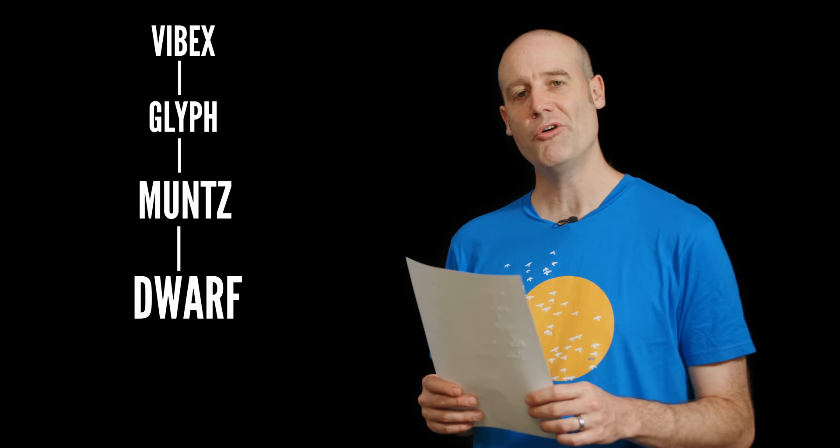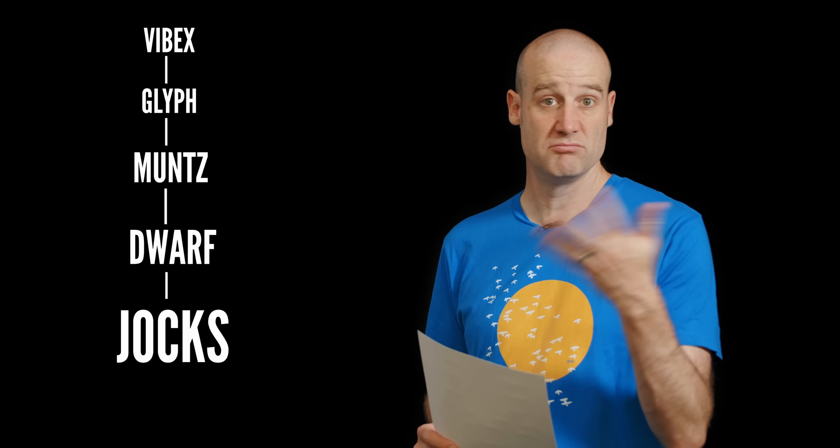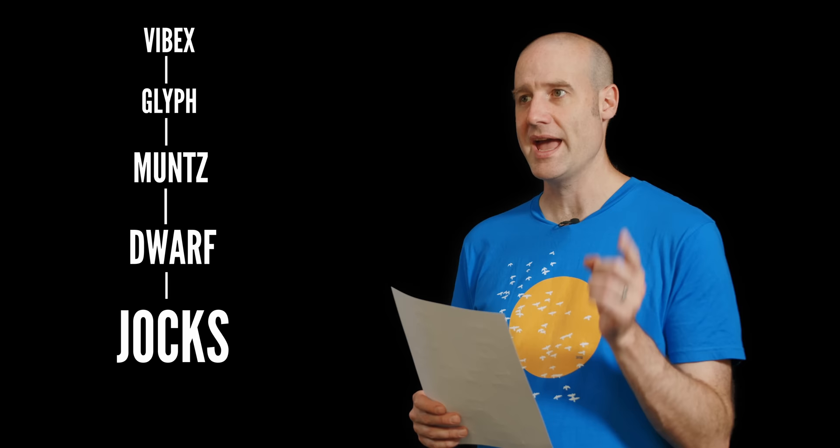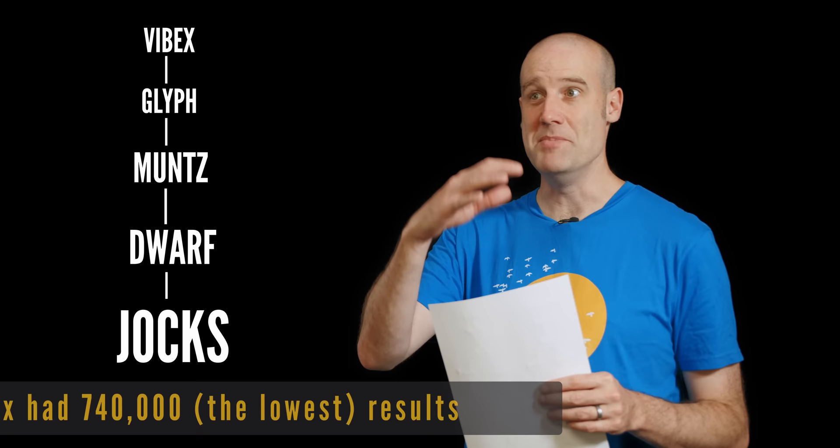And of the remaining 68, I could then rank them by how much a word Google thought they were. And here it is. First word is Vibex. That's a bold start. Followed by Glyph. No vowels. All averages out. Then months, dwarf, and jocks. And this was the top ranking one, because months, which is a word about a type of metal, I think, that only had 740,000 results on a Google search.